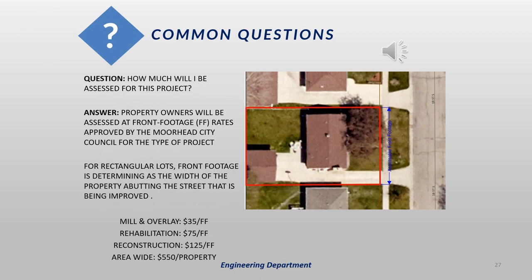One of the questions residents have is: how much am I going to be assessed for this project? By city policy, special assessments are levied at front footage rates approved by the Moorhead City Council for the type of work being done. Properties that front one of the streets in the project area will receive a special assessment based on the type of work being done and the front footage of their property. For rectangular lots, front footage is generally the width of the property abutting the street being improved. The rate depends on the type of work: if the city is doing a mill and overlay, it's $35 a front foot; if it's a rehab, it's $75 a front foot; and for a reconstruction, it's $125 a front foot. Some projects also include an area-wide assessment, which is generally included when work is done on a collector street — a street that sees higher traffic volumes than a normal local street.